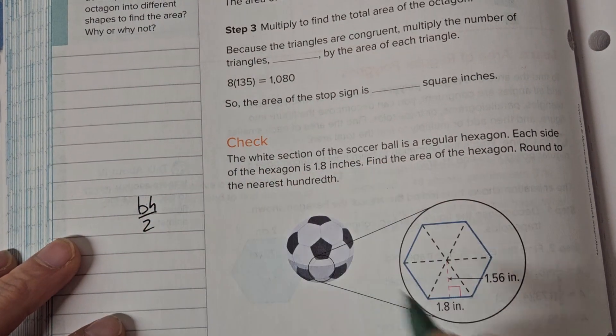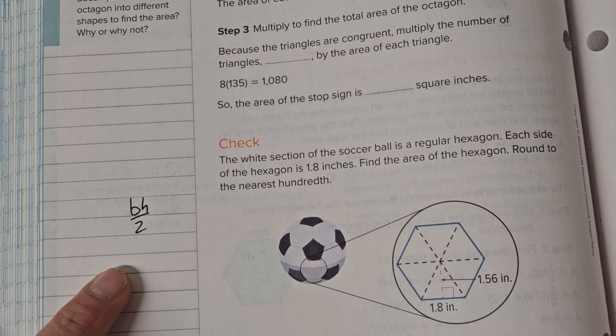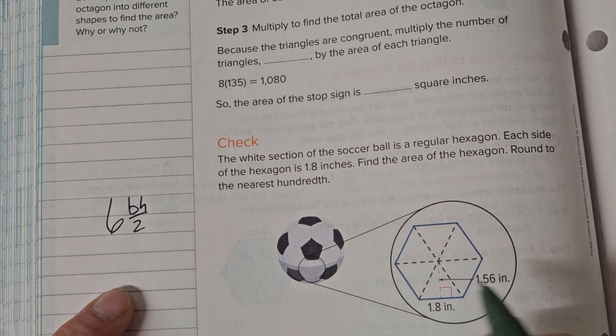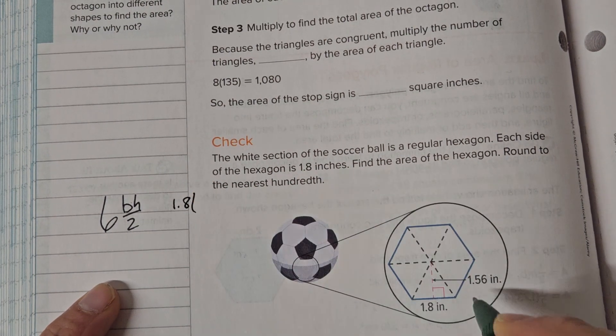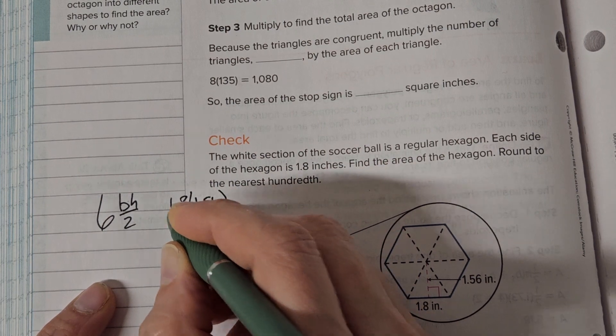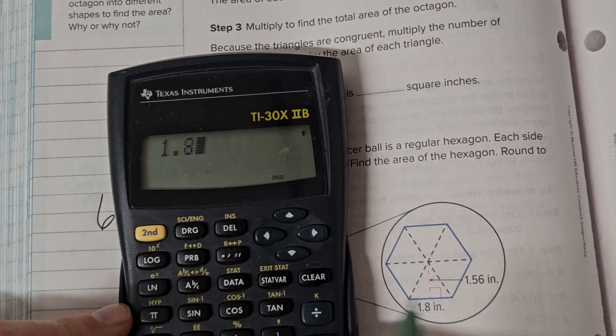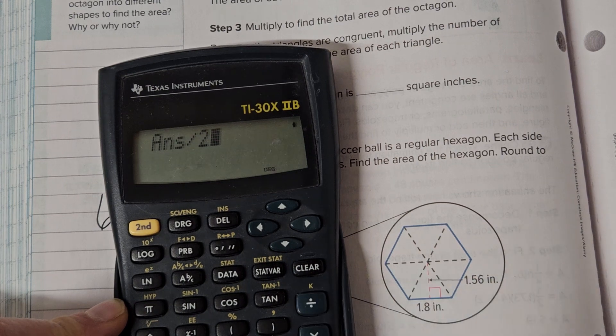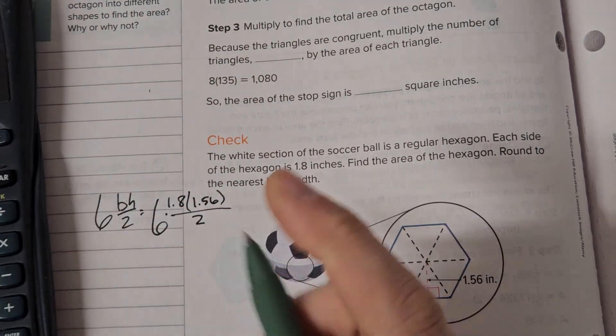Divided by 2. And how many triangles? One, two, three, four, five, six. Again, the same number of sides of the shape. So here our base is 1.8 times 1.56, divide that by 2, times that by 6. 8.424.